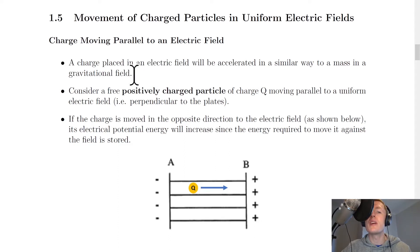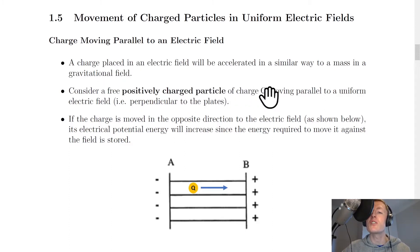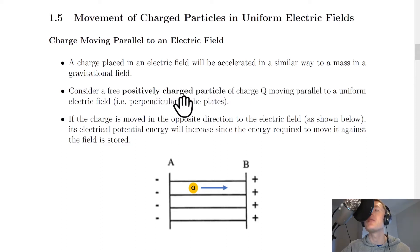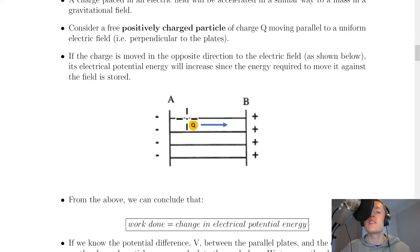A charge placed in an electric field will be accelerated in a similar way to a mass in a gravitational field. Consider a free positively charged particle of charge Q moving parallel to a uniform electric field, i.e. perpendicular to the plates. There's a positively charged particle Q moving perpendicular to the plates, so it's moving horizontally in this case.